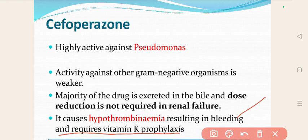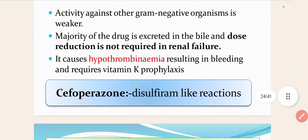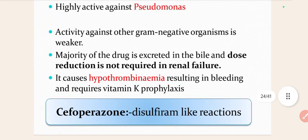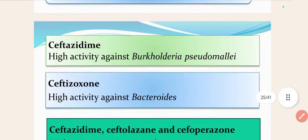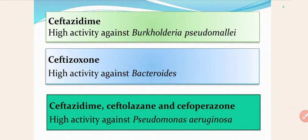No dose reduction is needed for cefoperazone in renal dysfunction or renal failure, because the majority of the drug is excreted in the bile. It causes hypoprothrombinemia, resulting in a bleeding tendency that requires vitamin K prophylaxis. Very importantly, if cefoperazone is given to an alcoholic person, it can cause a disulfiram-like reaction. This is frequently asked in MCQs: which cephalosporin causes a disulfiram-like reaction? The answer is cefoperazone.